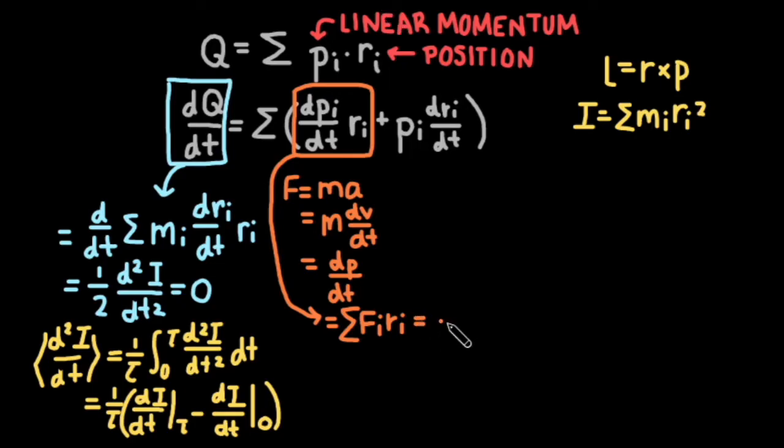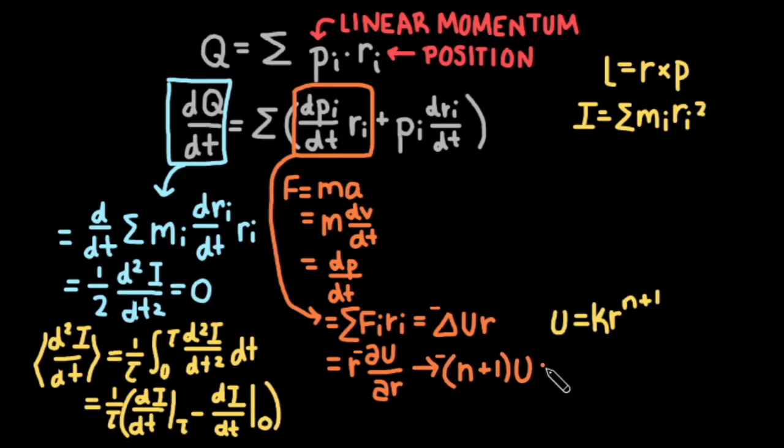The total force is equal to the negative gradient of the potential energy. So we can rewrite this as the gradient of u times r, or r times partial u over partial r. For a potential of the form kr to the n plus 1 power, this becomes n plus 1 times the gravitational potential. By the inverse square law, n equals negative 2, so our term simplifies to u.